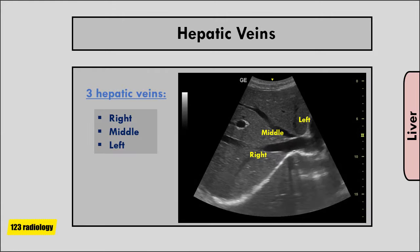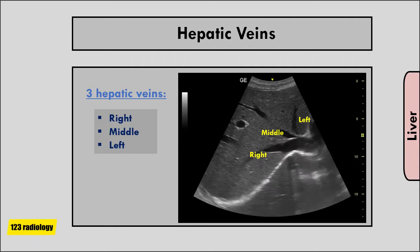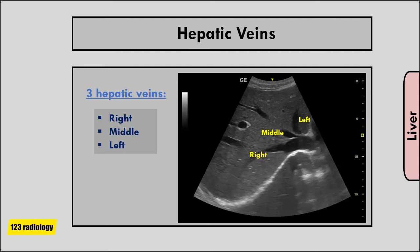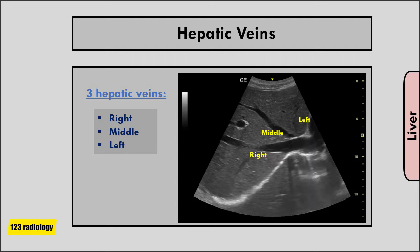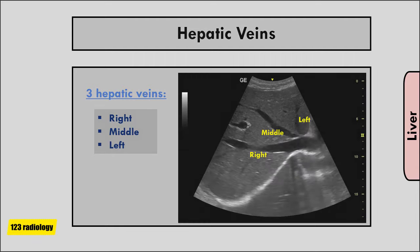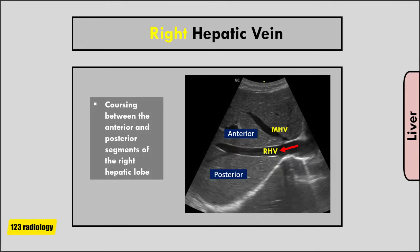Understanding vascular anatomy of the liver is essential to appreciate the relative positions of the hepatic segments. The major hepatic veins course between the lobes and segments — they are ideal segmental boundaries, but are visualized only when scanning the superior liver. There are three hepatic veins: right, left, and middle. The right hepatic vein runs within the right intersegmental fissure and divides the right lobe into anterior and posterior segments. In more caudal sections of the liver, the right hepatic vein is no longer identified.